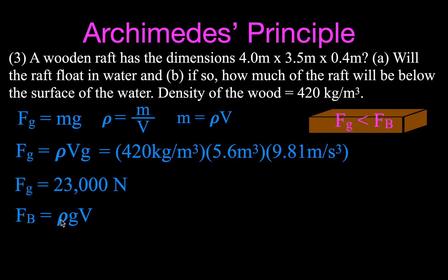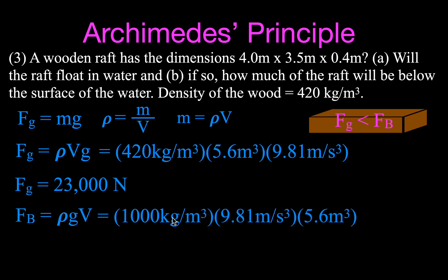Now we calculate the buoyant force. Wood is less dense than water, so it should float. Using the density of water (1,000 kg/m³) times g times the total volume of the raft, the maximum buoyant force is about 55,000 newtons. Since the buoyant force (55,000 N) is greater than the weight (23,000 N), the raft floats up to the surface until the two forces become equal.